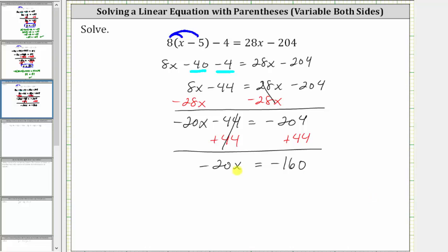And now for the last step, we multiply or divide in order to solve for x. And since negative 20x means negative 20 times x, to undo the multiplication and solve for x, we divide both sides by negative 20. Simplifying, negative 20 divided by itself simplifies to one, one times x is x. We have x equals negative 160 divided by negative 20, which is equal to positive eight.